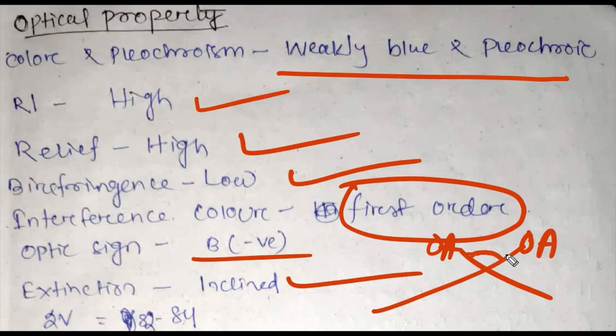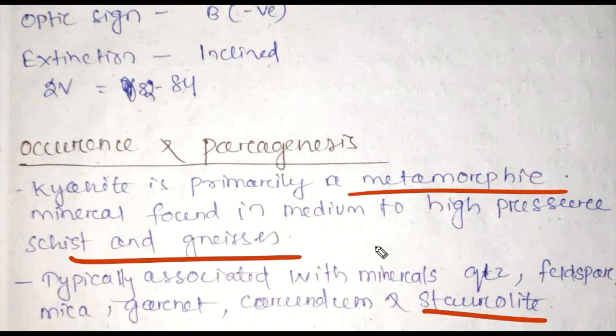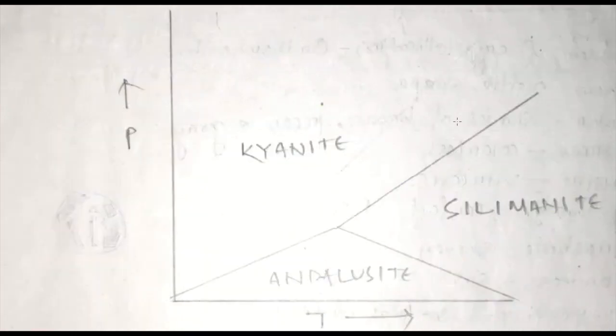Occurrence and paragenesis: Kyanite is primarily a metamorphic mineral found in medium to high pressure schist and gneiss. Typically associated with minerals like quartz, feldspar, mica, garnet, corundum and staurolite. So this is medium to high pressure. In this diagram, kyanite mineral forms at very high pressure. So today we covered aluminum silicate minerals. This is the end of the chapter.